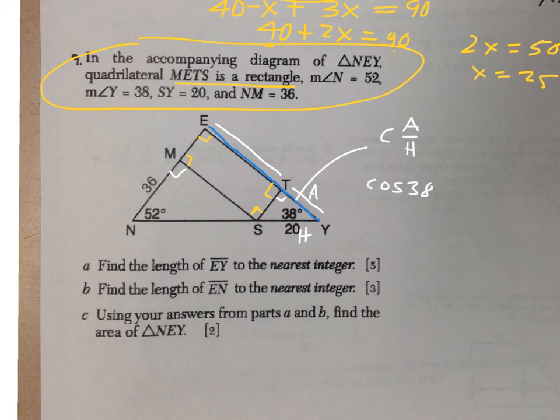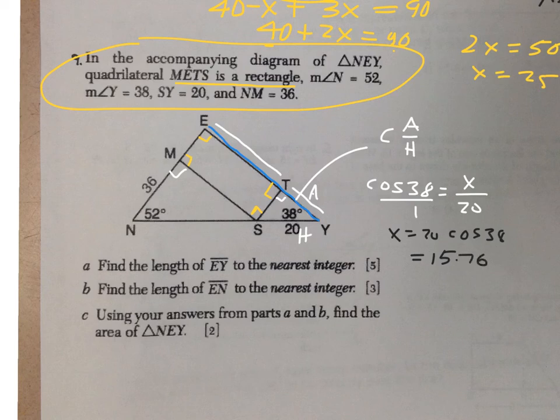The cosine of 38 degrees is equal to the adjacent side over the hypotenuse. So cross-multiplying there will give me the answer. So X is equal to 20 times the cosine of 38. So about 15.76. And that would be this piece right here, about 15.76.